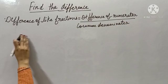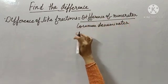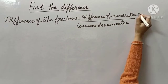Difference of like fractions equals difference of numerators upon common denominator. So how to find the difference of like fractions? Difference of numerators upon common denominator.